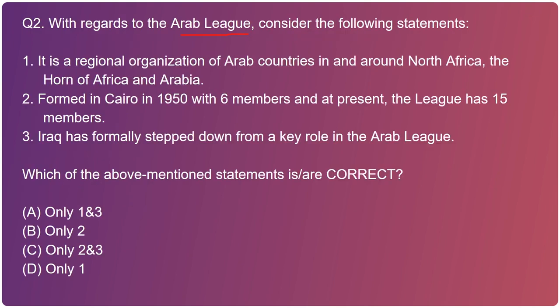Moving to the next one regarding the Arab League - consider the following statements. The first statement: it is a regional organization of the Arab countries in and around North Africa, the Horn of Africa, and Arabia. The second statement: it was formed in Cairo in 1950 with six members; at present the league has 15 members. The third statement: Iraq has formally stepped down from a key role in the Arab League.